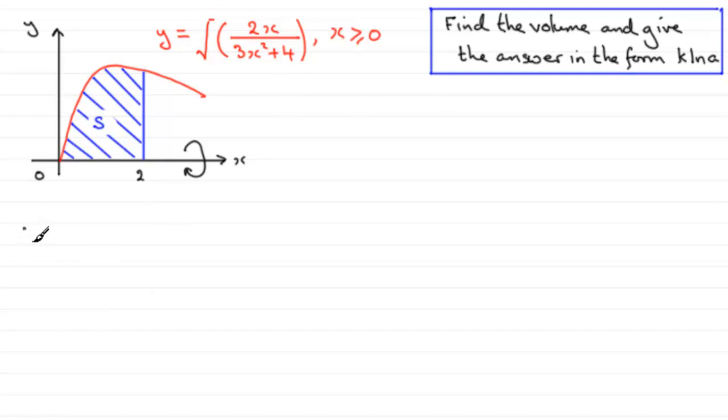So how do we do something like this? Well, we should know that the volume of revolution about the x-axis is always given by pi times the integral of y squared with respect to x, with x going from, well in this example, from 0 to 2.